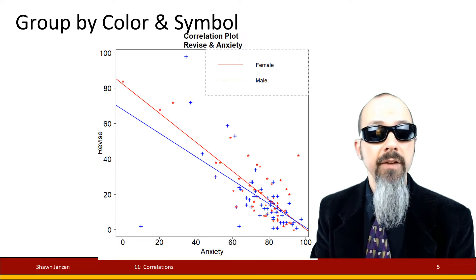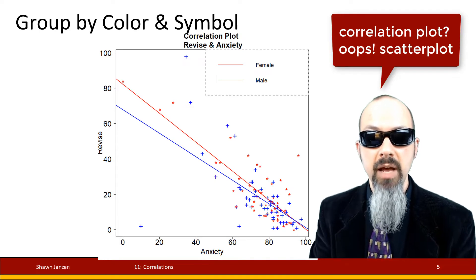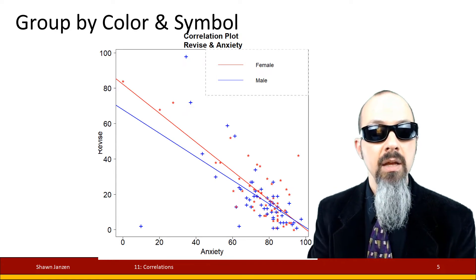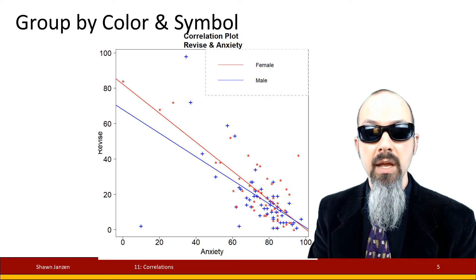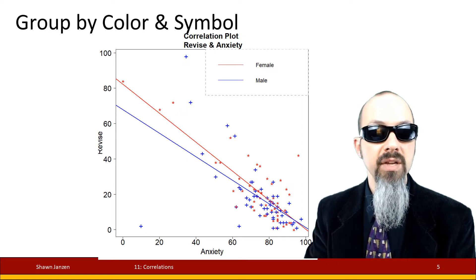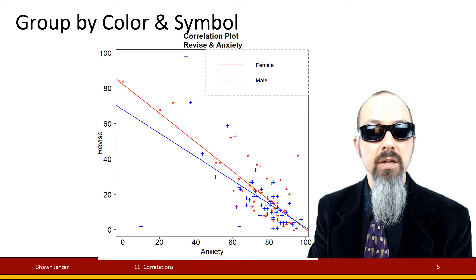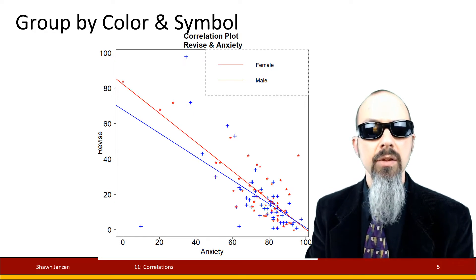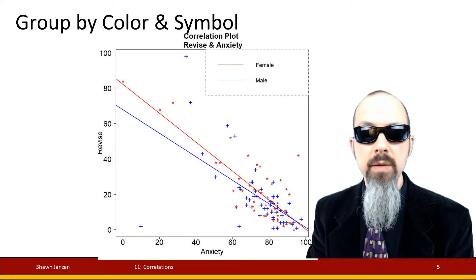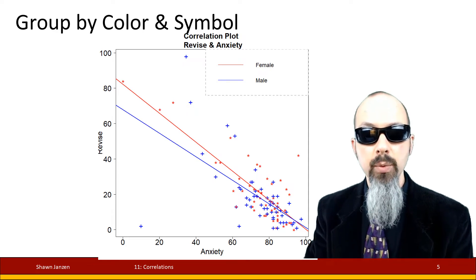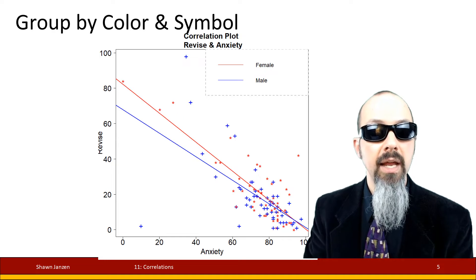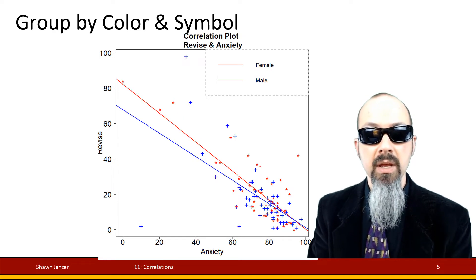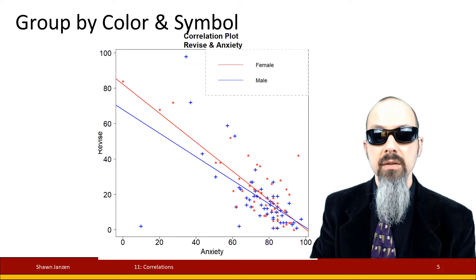Now I'm going to show you the graphic of what we just produced. This is the correlation plot between revision time and level of anxiety from what we had before, but whereas before it was just a bunch of red circles with a red line cutting through it, now we have red stars and blue plus signs — the blue plus signs for men and red stars for women — along with two best-fit lines. They're tracking relatively close to each other because the data points, especially in the lower right, are really overlapping.